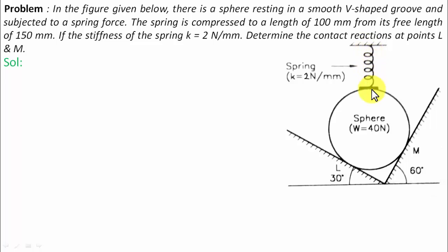There is this small space into which we need to fit a spring. The spring that we have has a natural length of 150 millimeters. That means when the spring is not pulled or compressed, its natural length is 150 millimeters. But the space over here is less, only 100 millimeters.